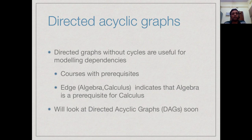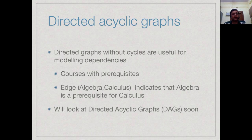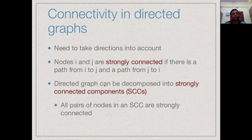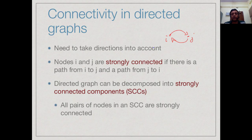It is important to identify cycles because graphs without cycles are called directed acyclic graphs (DAGs), which are useful for modeling dependencies. For instance, courses with prerequisites can be modeled as a directed graph where edges represent prerequisites — algebra pointing to calculus means algebra is a prerequisite. There can be no cycles, since two courses cannot be prerequisites of each other. We will look at DAGs in a later lecture.